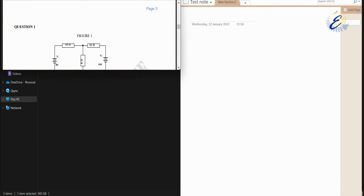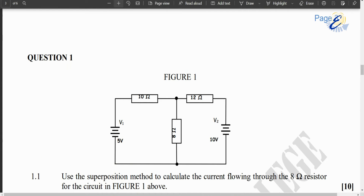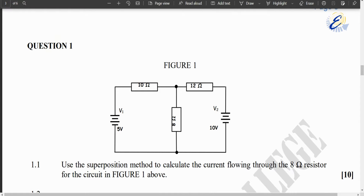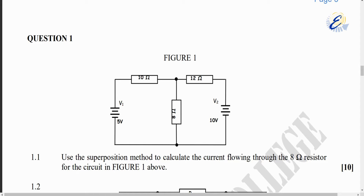We are going to show how to calculate a certain current in a particular circuit using superposition theorem. We have our question here — Question 1, Figure 1. Looking at the circuit, we have two voltage sources, V1 and V2, and three resistors: 10 ohms, 12 ohms and 8 ohms. The question says: use superposition method to calculate the current flowing through the 8 ohm resistor.